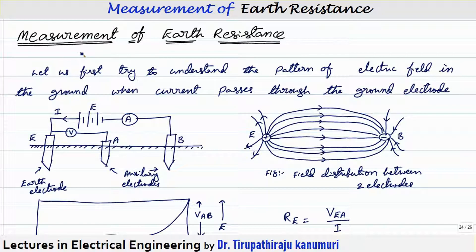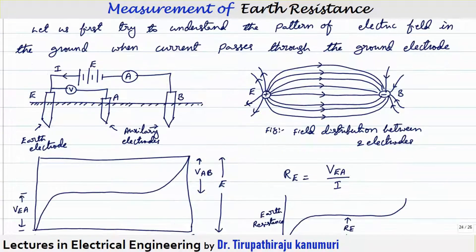Today we are going to discuss the measurement of earth resistance of the earth electrode. Before going to that, let us first try to understand what will be the pattern of the electric field when a current, fault current, or leakage current passes through the electrode, and how the electric field distribution will be there so that we can clearly understand the procedure to measure the resistance of the earth electrode.